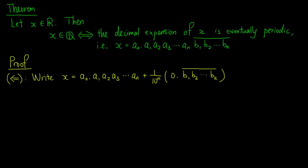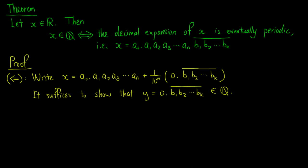Since a0.a1, a2, a3, up to an, and 1 over 10 to the nth power are rational, to show that x is a rational number, it suffices to show that the number inside the bracket, which we call y, is rational.